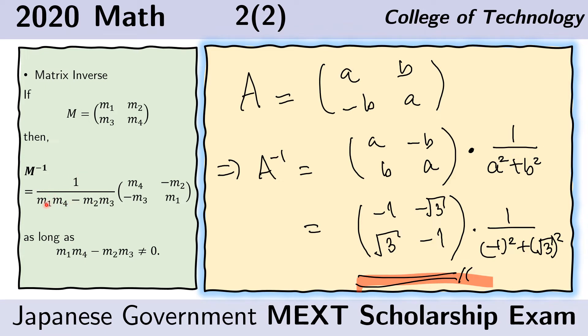We multiply the entire matrix by this scalar which is the reciprocal of the product M1 M4 minus the product M2 M3. This inverse only exists when this product is not equal to 0.